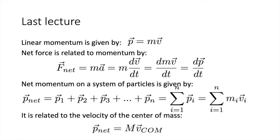First, a quick recap of the most important ideas from last lecture. We learned about linear momentum, given by p = mv, where p is our symbol for linear momentum. Momentum is a vector in the same direction as the velocity vector. Net force is related to momentum by F_net = ma = m(dv/dt) = dp/dt.